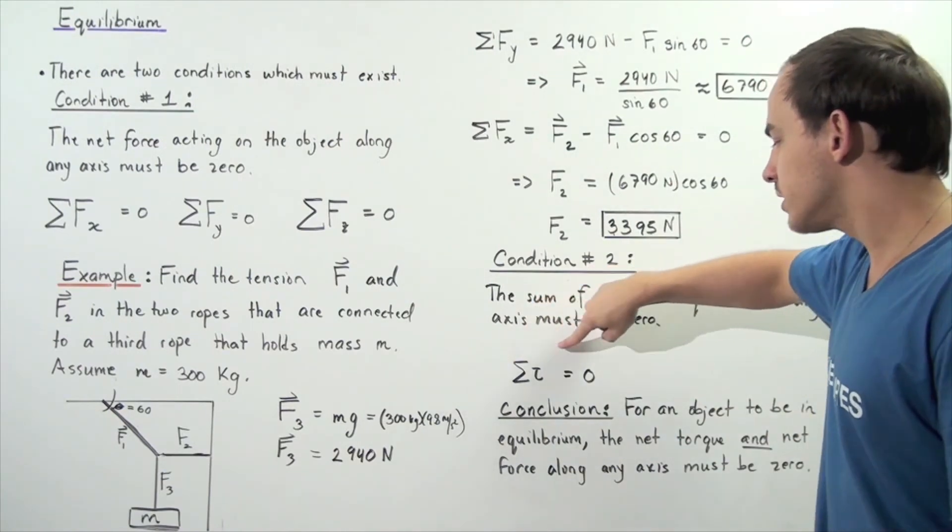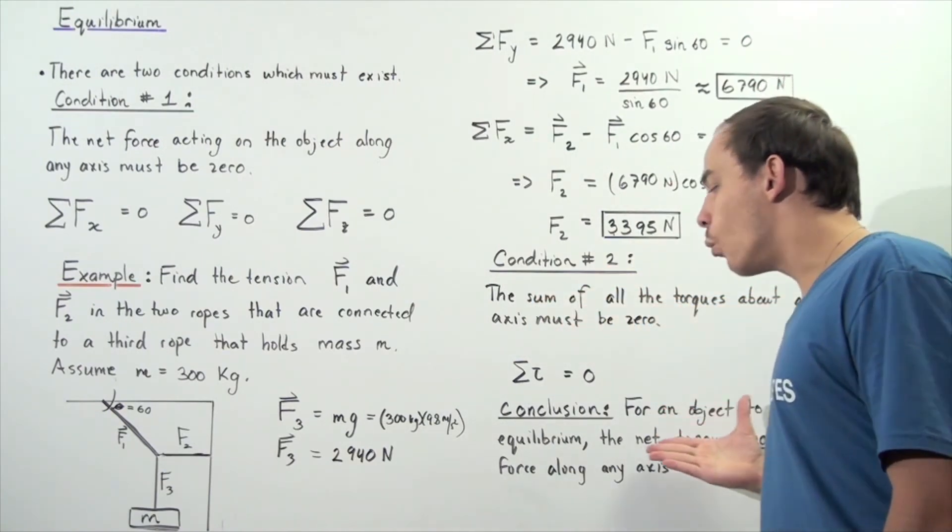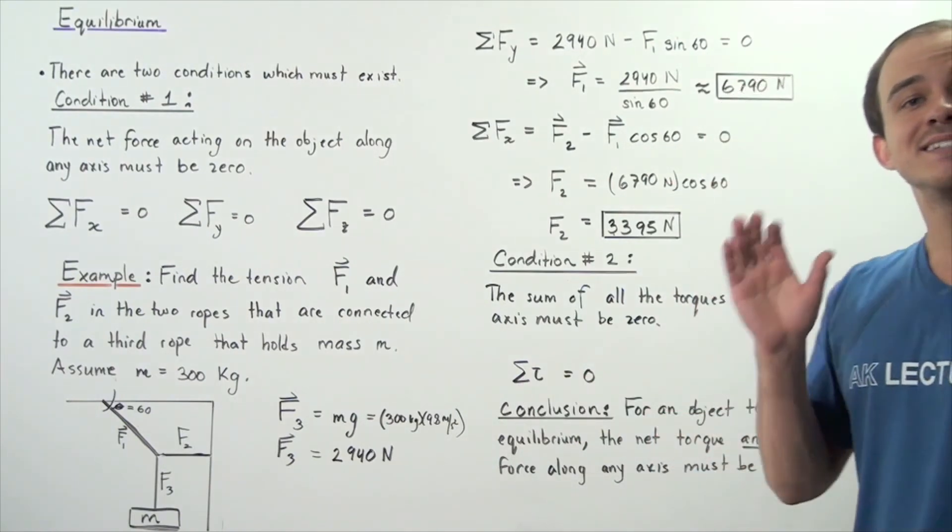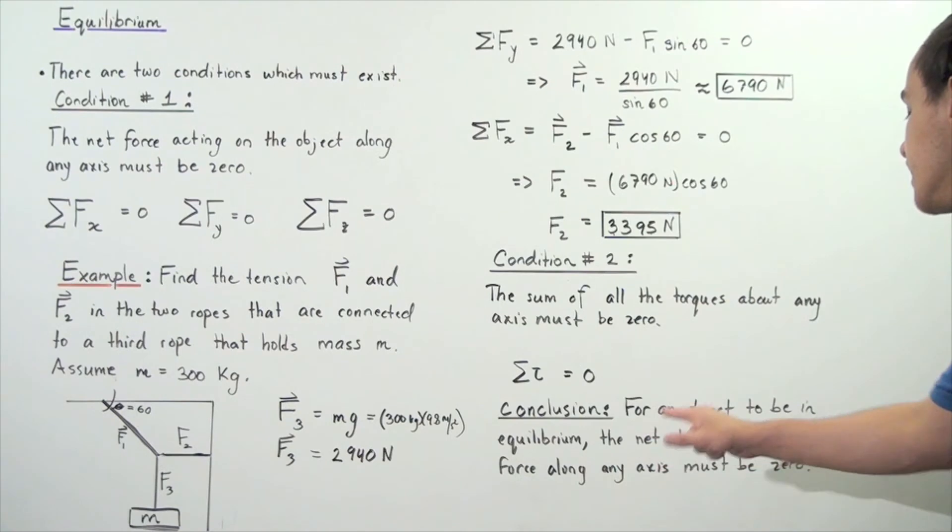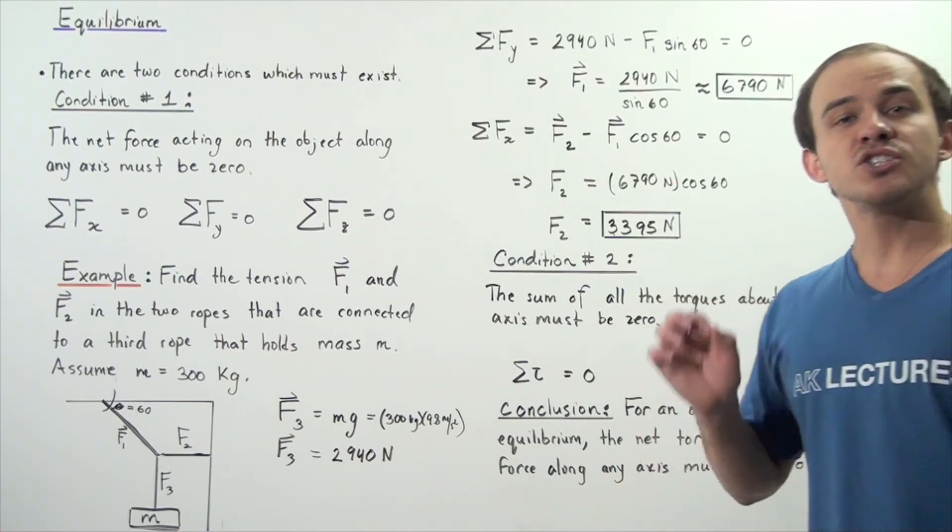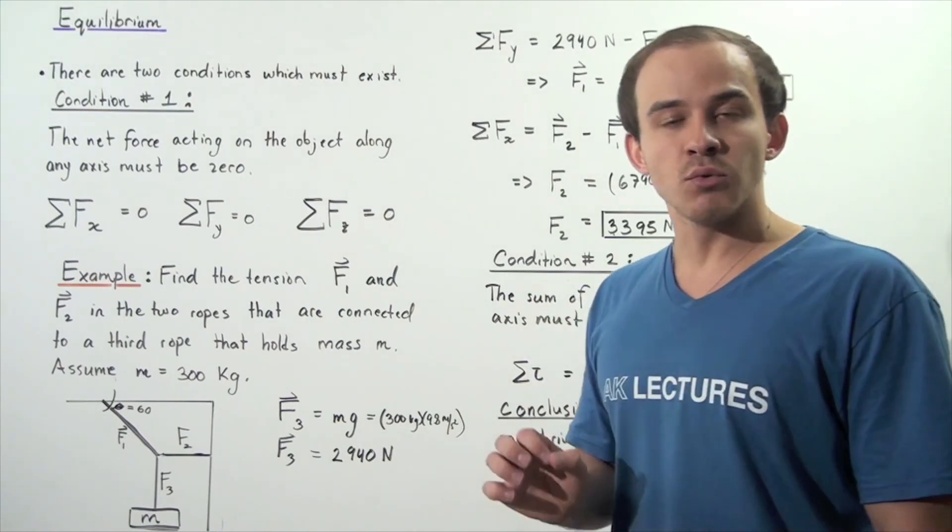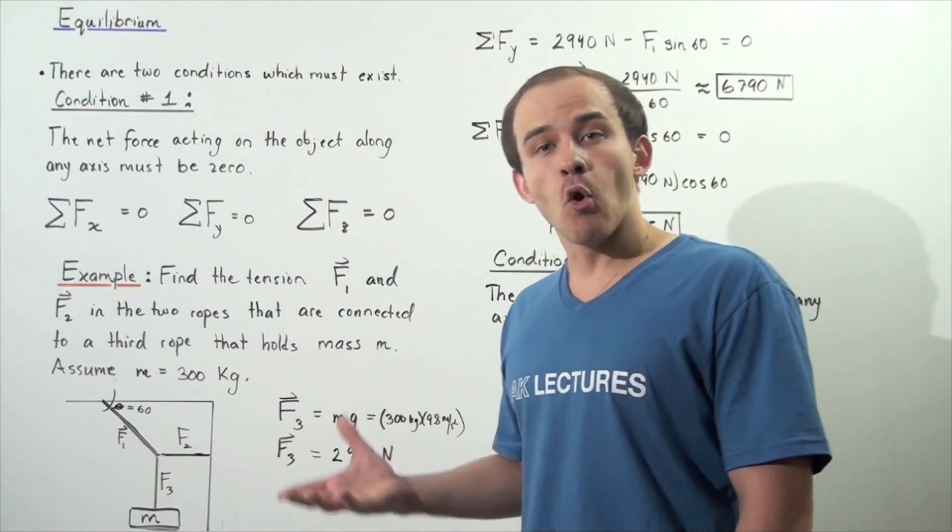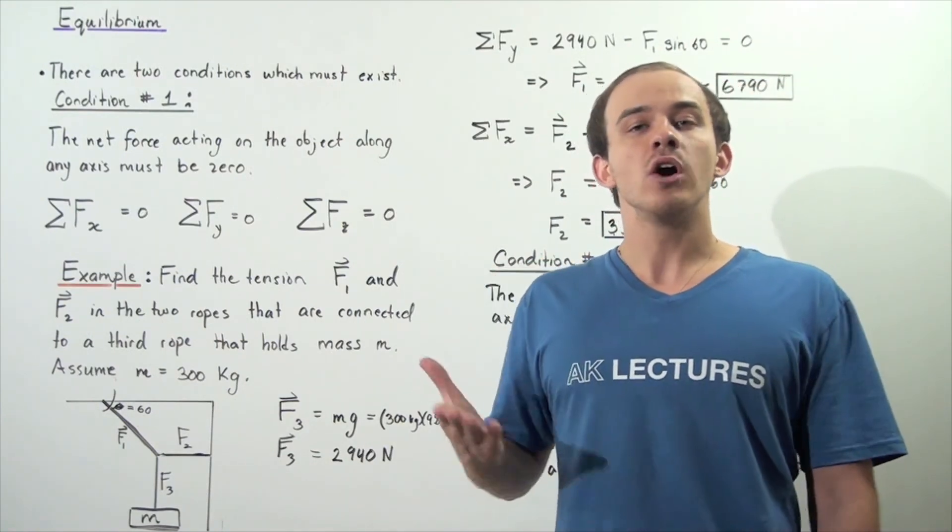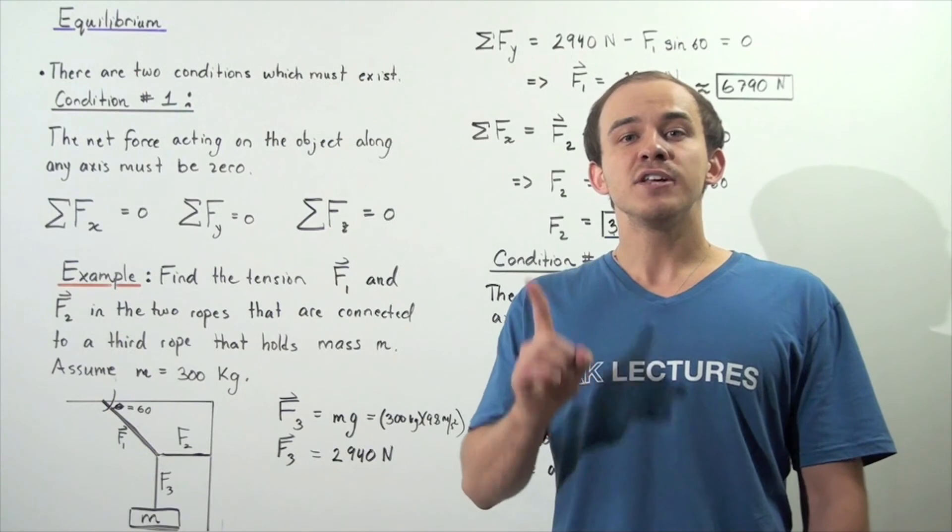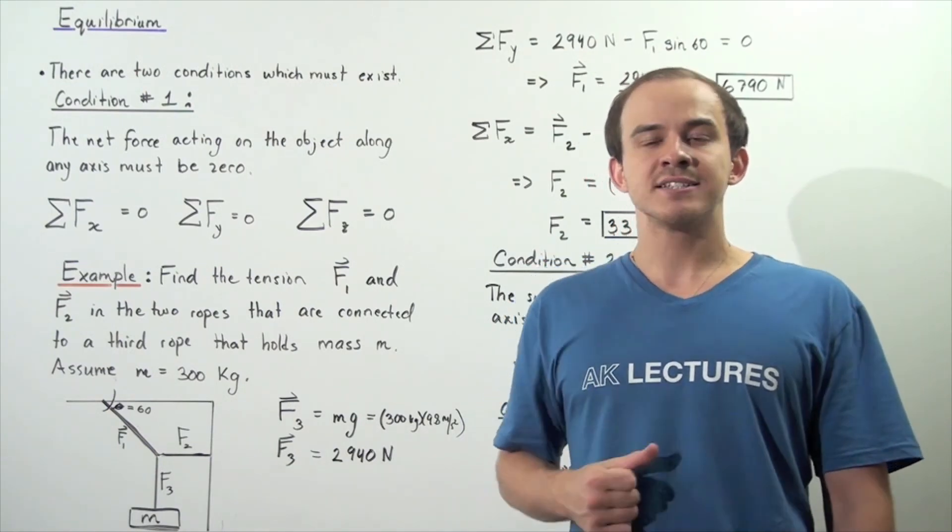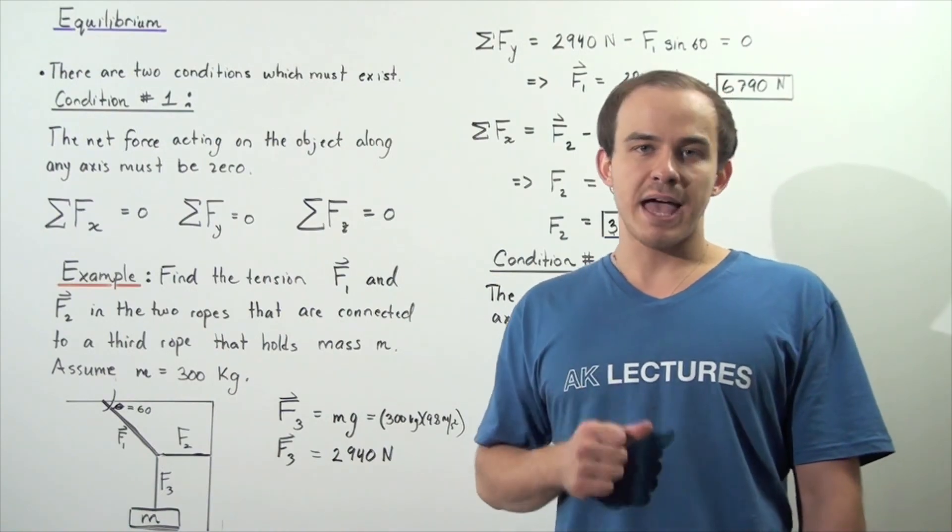So the sum of the torque is equal to zero. So once again, what is our conclusion? Well, for any object to be in static equilibrium, the net torque as well as the net force acting on the object must always sum up to zero. If the net force is not zero, that means we're going to have acceleration along some axis. And if the net torque is not equal to zero, that means we're going to have angular acceleration about some axis.